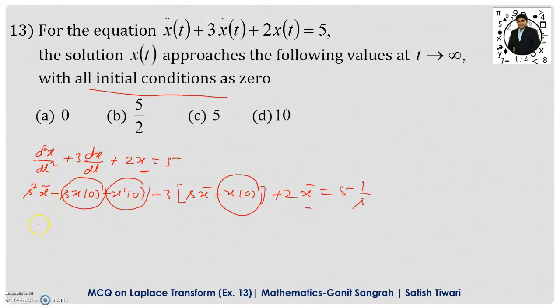Now collect the x̄ terms and take out the common. We will get (s² + 3s + 2)·x̄ = 5/s. From here, x̄ = 5/(s(s² + 3s + 2)). So we got the function of s.